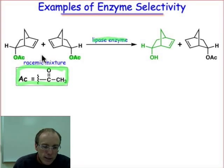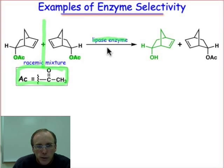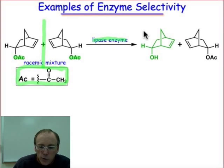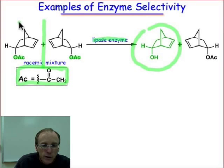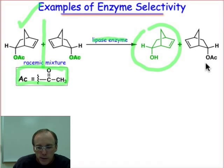We can see that these two substrates are related as an enantiomeric pair. If they're present as a one-to-one mixture — a racemic mixture — and subjected to this ester-hydrolyzing enzyme, this lipase, only one of those enantiomers undergoes reaction. The one on the left is reactive; the one on the right, that acetate group remains unchanged. It's unreactive. That's a remarkable example of substrate specificity.